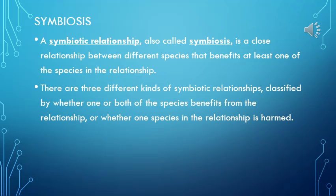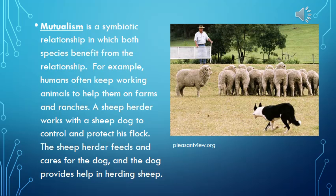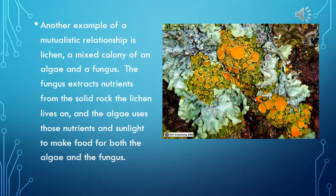Symbiosis. A symbiotic relationship, also called symbiosis, is a close relationship between different species that benefits at least one of the species. There are three kinds of symbiotic relationships, classified by whether one or both species benefit, or whether one species is harmed. Mutualism is a symbiotic relationship in which both species benefit. For example, a sheep herder works with a sheepdog to control and protect his flock — the herder feeds and cares for the dog, and the dog helps herd sheep. Another example is lichen, a mixed colony of algae and fungus, where the fungus extracts nutrients from rock and the algae uses those nutrients and sunlight to make food for both.